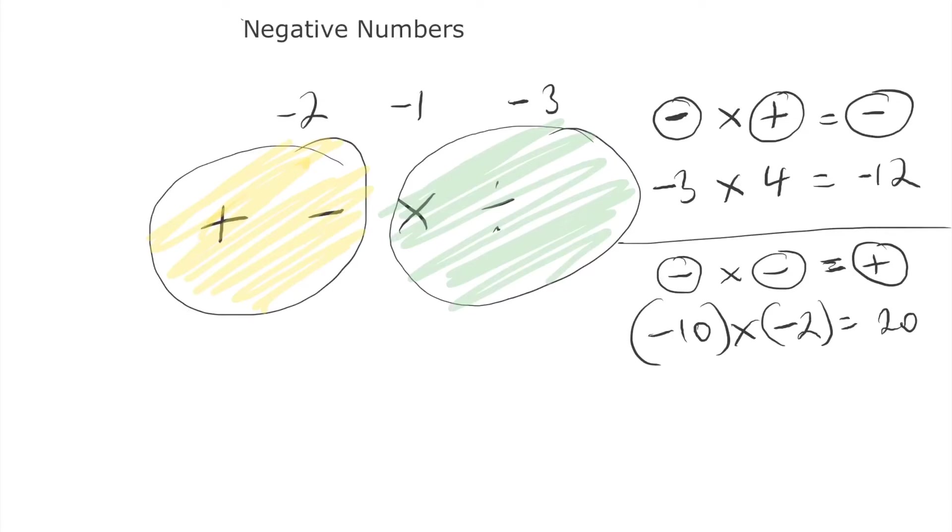If we, just to revise again, if we multiply a negative number by a positive number, our answer will always be negative. And just to say that it doesn't matter what way round it is, so long as you're multiplying a negative number with a positive number, the answer will always be negative. Now, when you multiply a negative number by another negative number, the answer will be positive.